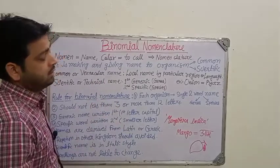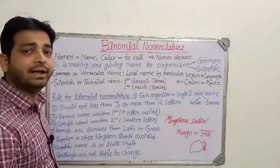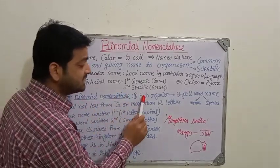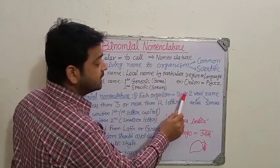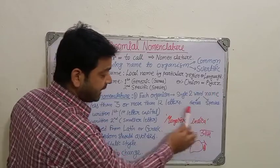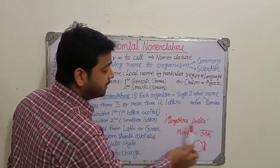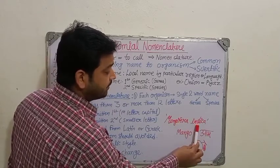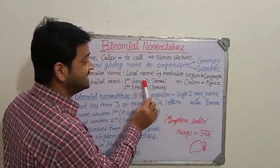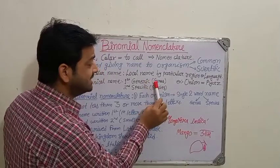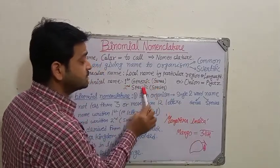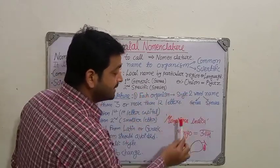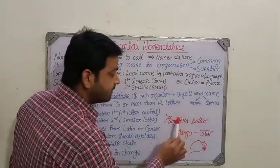There are certain rules when giving a name to a particular organism — whether plant, animal, or microorganism. Rule one: each organism has a single two-word name. For example, mango, also called 'aam,' is Mangifera indica. Here, Mangifera is the genus and indica is the species.